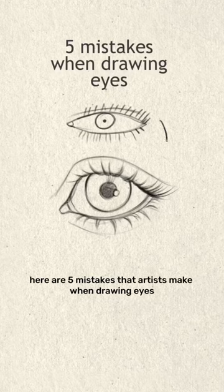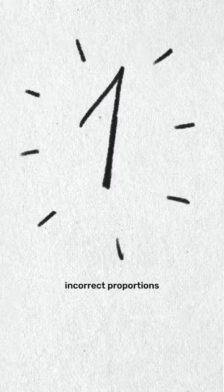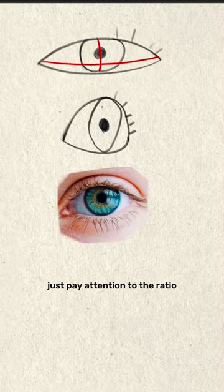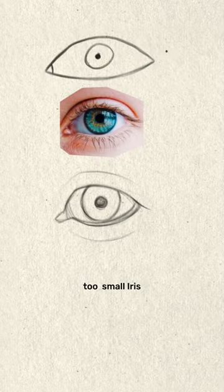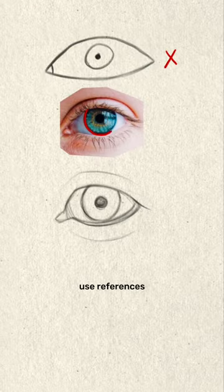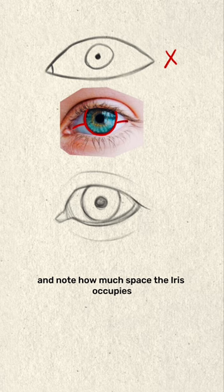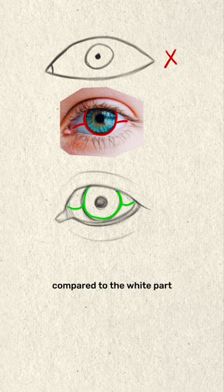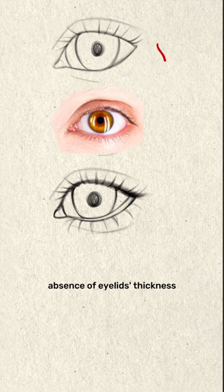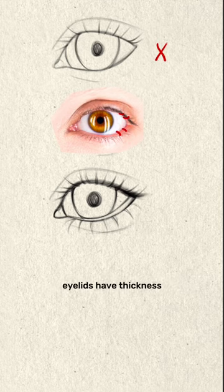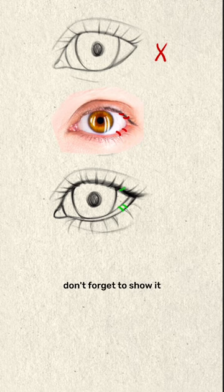Here are five mistakes that artists make when drawing eyes. First, incorrect proportions — pay attention to the ratio between the height and width of the eyes. Second, too small iris — use references and note how much space the iris occupies compared to the white part. Third, absence of eyelid thickness — look at references, eyelids have thickness, don't forget to show it.